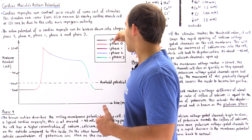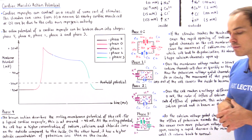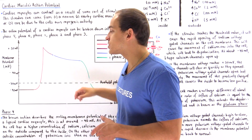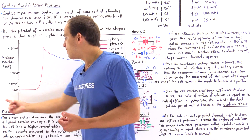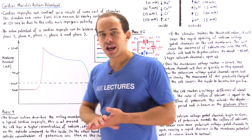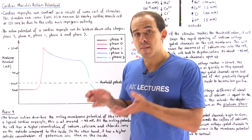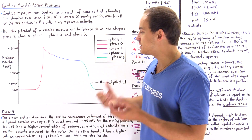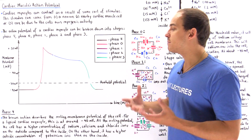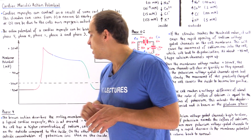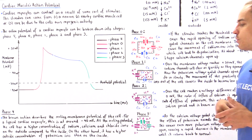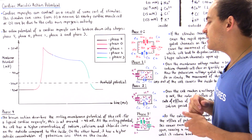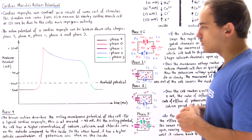Phase four is shown in brown. Notice that this line has a constant slope of zero, meaning our membrane voltage is not changing. This is the voltage of the membrane when the cell is resting and not generating any action potential — this is known as the resting membrane potential. For a typical cardiac myocyte, this is at around negative 90 millivolts.